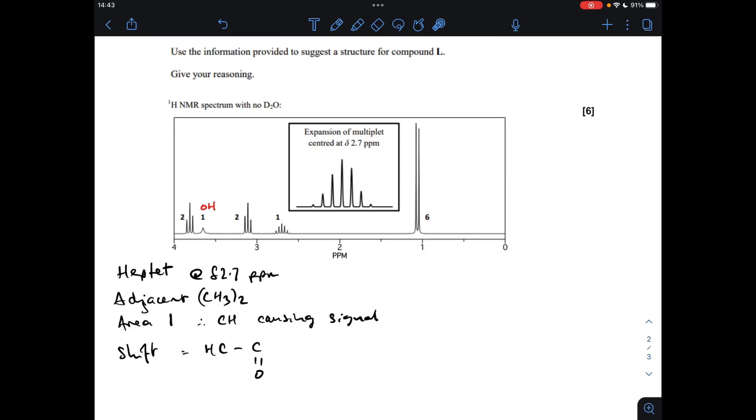The area of one means it's a CH causing the signal, and the shift value means we've got an H to C to C double bond O environment, which is consistent with the carbon-13 NMR spectrum. Remember we've got that carbon-oxygen double bond environment in there.